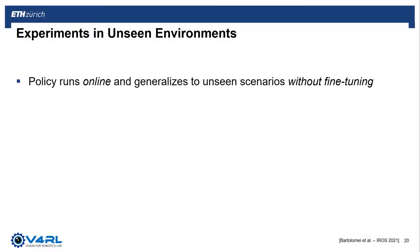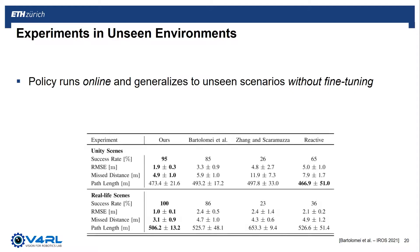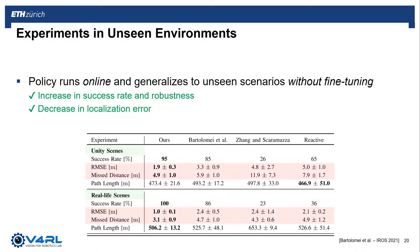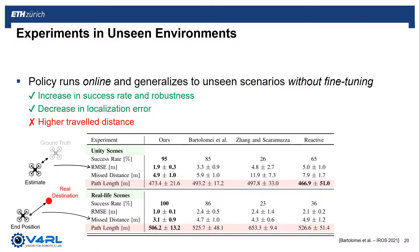As seen from the video, our policy can generate actions online and can generalize to unseen scenarios without the need of additional fine-tuning. Here we report the numerical results of the test runs over 20 experiments per each model. In the top part of the table, we show the summary of the results in scenes created with Unity, while in the bottom part, the results in reconstructions of real-life places. In both cases, our planner beats our competitors in success rate and robustness. It also presents a decrease in localization error, both in RMSE — indicating the error between the estimated position and the ground truth — and in missed distance, that is the distance between the end position of the robot and the actual destination. All of this happens at the expense of a slightly higher travel distance, but this is expected, as our planner deviates the trajectory in order to track the best landmarks in view and improve state estimation performance.